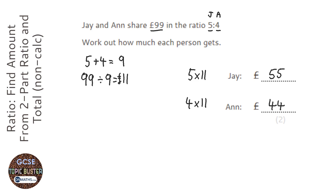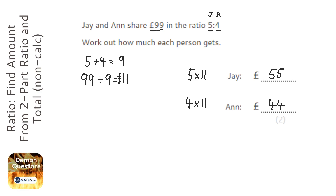We can just check our answer by adding together the two amounts, because we're sharing the whole of the £99 between the two of them. 55 plus 44 is 99.